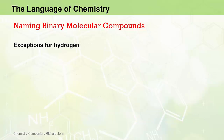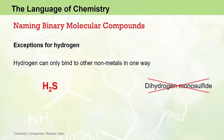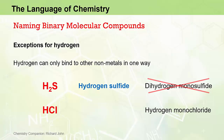There are also exceptions for binary molecular compounds containing hydrogen, because hydrogen can only bind to other nonmetals in one way. For example, H2S would technically be dihydrogen monosulfide, but because there is only one possible compound between hydrogen and sulfur, we simply call it hydrogen sulfide. Similarly, HCl is called hydrogen chloride rather than hydrogen monochloride.